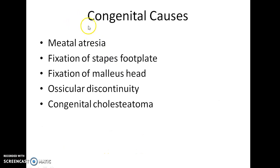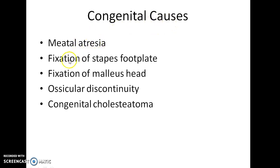If you look at the causes of conductive hearing loss, we can divide them into congenital causes and acquired causes. The congenital causes include meatal atresia, fixation of stapes footplate, fixation of malleus head, ossicular discontinuity, and congenital cholesteatoma.